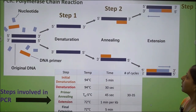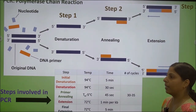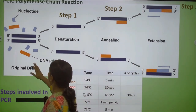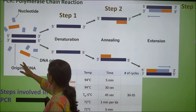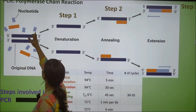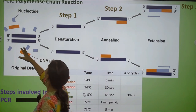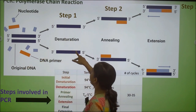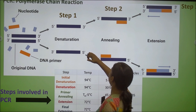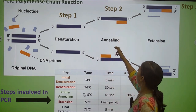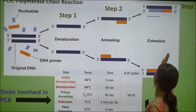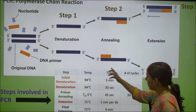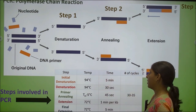This is the basic representation of the polymerase chain reaction. The original DNA is the template, and these are the dNTPs. All components are added in one reaction. In the first step, denaturation occurs — both strands are separated. In the second step, primer annealing takes place. Simultaneously, at the extension step, DNA synthesis begins in the 5 prime to 3 prime direction.